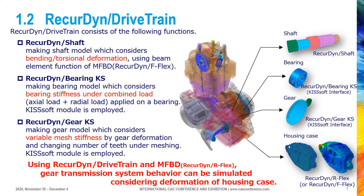Ricardine Gear KS can build a gear model which considers variable mesh stiffness caused by gear teeth deformation and changing number of teeth under meshing. KitSoft module is integrated in this function. Combining Ricardine drivetrain and the general function of Ricardine for flexible body, gear transmission system behavior can be simulated reasonably even considering housing case deformation.